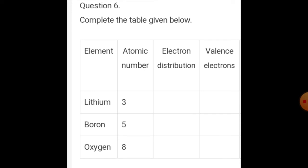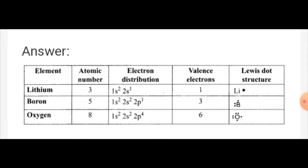Question number 6: complete the table — Element, atomic number, electronic distribution, valence electrons. Lithium: atomic number 3, electronic distribution 1s2 2s1, valence electrons 1, Lewis dot structure shows Li with 1 dot. Boron: atomic number 5, electronic distribution 1s2 2s2 2p1, valence electrons 3, Lewis dot structure shows B with 3 dots. Oxygen: atomic number 8, electronic distribution 1s2 2s2 2p4, valence electrons 6, Lewis dot structure shows O with 6 dots.